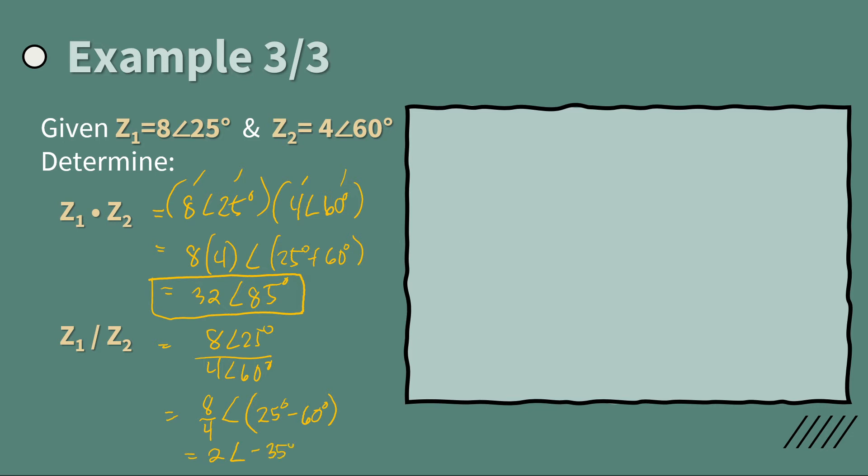I think you see already the answer, which is 2 angle 25 minus 60. This is negative, that should be 35 degrees. So 2 angle negative 35.